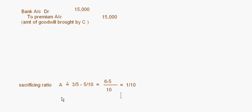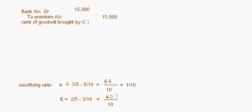For B, the sacrificing ratio is: 2/5 minus 3/10. That gives us 4/10 minus 3/10, which also comes to 1/10. So both A and B are sacrificing, and their sacrificing ratio is 1 is to 1.